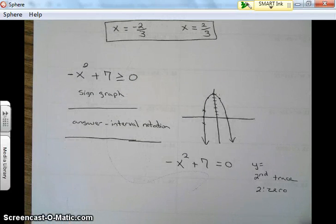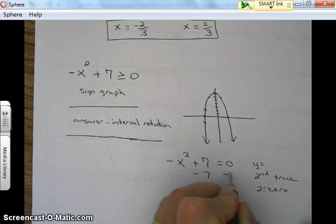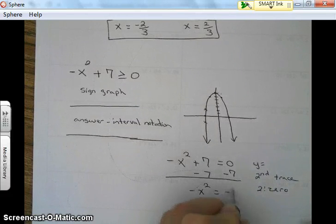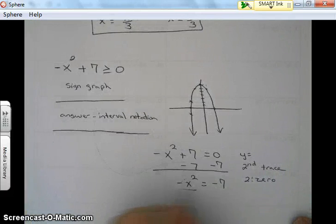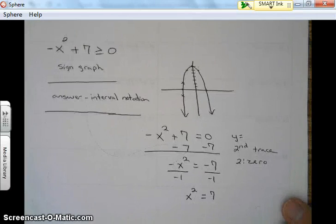But I'm going to go ahead and do it a different way. I'm going to go ahead and just solve this by subtracting seven on both sides, dividing by negative one, and then square rooting.